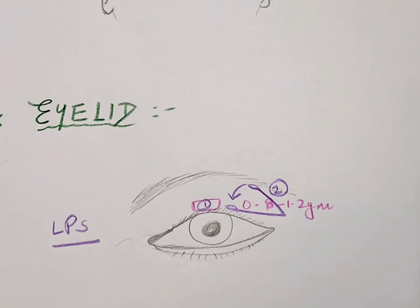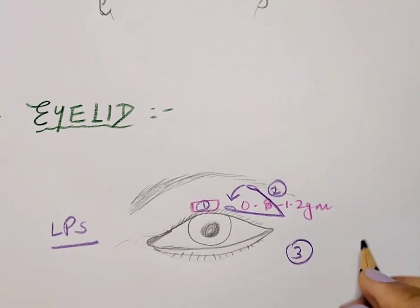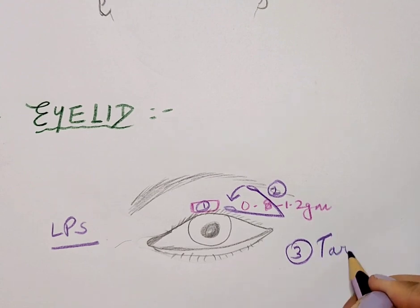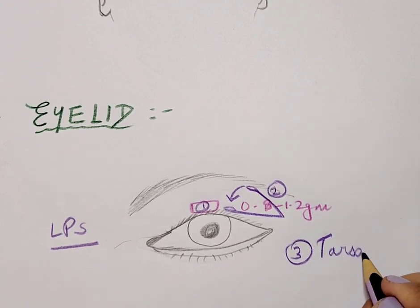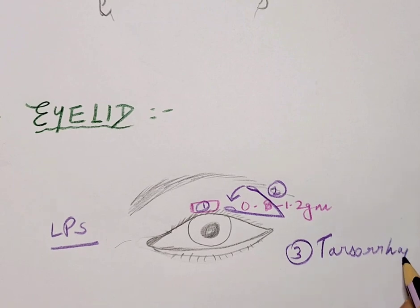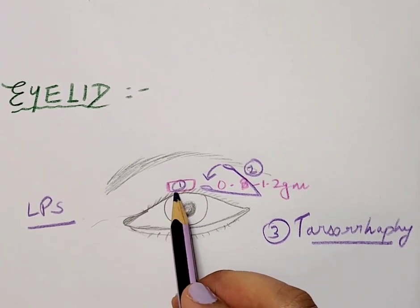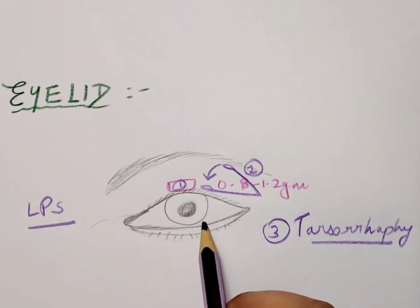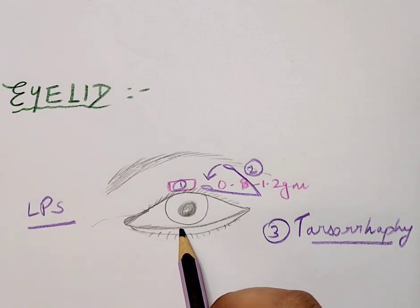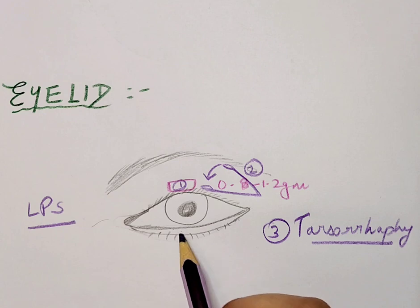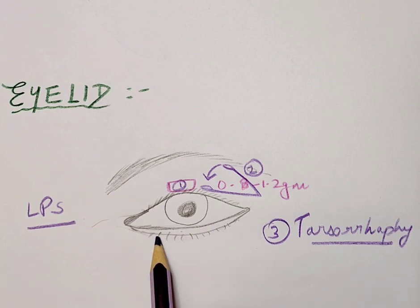The third option for upper eyelid management is a tarsorrhaphy, which is considered the final — and in some cases palliative — procedure. It closes both tarsal plates together, achieving closure of the eye. It can be temporary or permanent, but it is usually the last resort because it blocks the visual function of that eye.